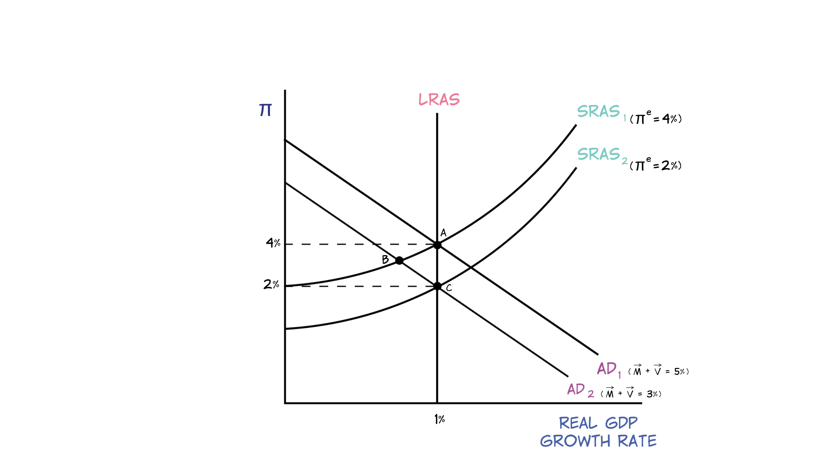Since wages and prices don't all move at once, it takes time to adjust to our new equilibrium. And the adjustment process creates a painful reduction in the growth rate of real GDP. So in the short run, we move from point A to point B. Now, eventually, we'll get back to our North Star growth. But it'll take time for everyone to recognize that lower inflation rate and adjust their wage and price demands appropriately.